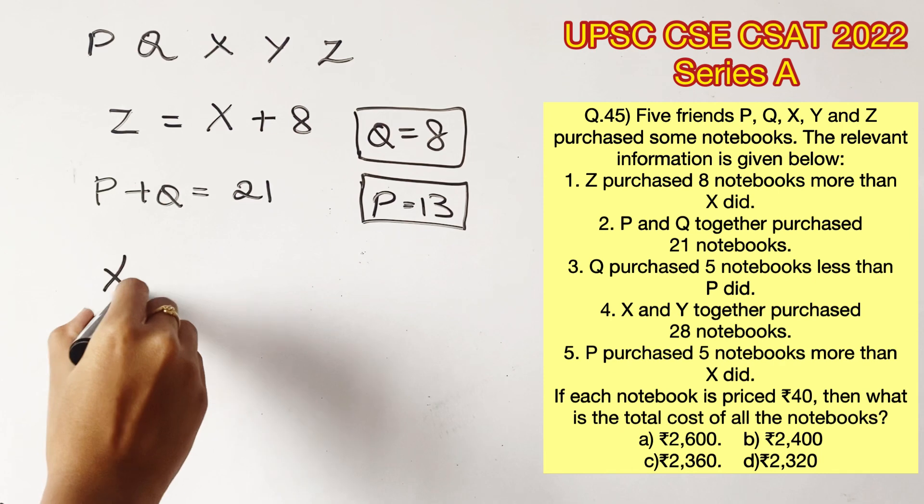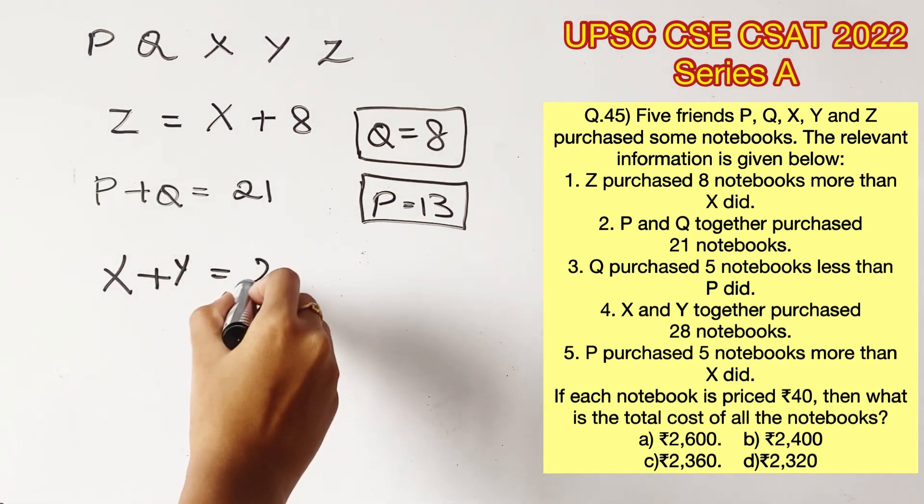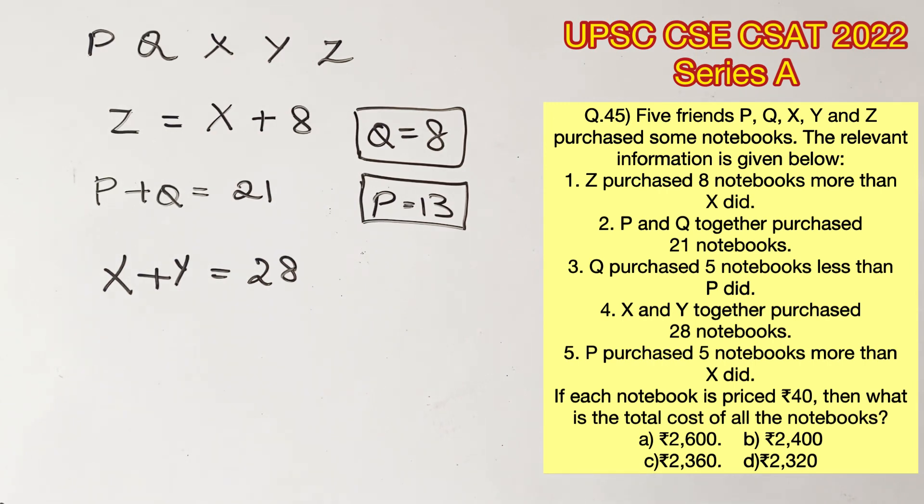The next statement says X and Y together purchased 28 notebooks, which means X plus Y is equal to 28. And the next statement says P purchased 5 notebooks more than X did, which becomes P is equal to X plus 5.